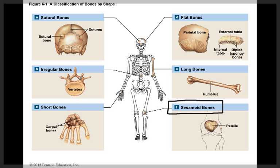Next we have the sesamoid bones. These are small, flat, and shaped like a sesame seed. The patella bone is one example of a sesamoid bone. The pisiform bone, close to the wrist, is another example of a sesamoid bone.